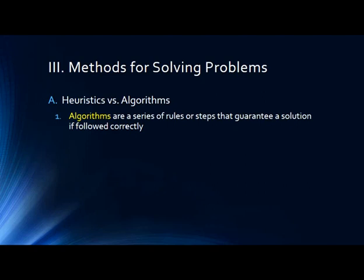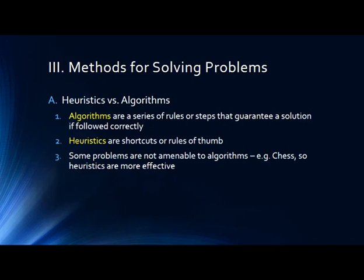How do we solve problems? This is where we get back to heuristics. Algorithms are a series of rules or steps that guarantee a solution if followed correctly. Heuristics are more like shortcuts or rules of thumb. A human chess player cannot play chess algorithmically — you simply don't have time to go through every possible move. You have to use rules of thumb based on your experience. Most computers that can win at chess now do so because they're fast enough to run through every possible move and pick the best one.